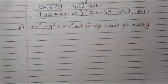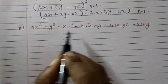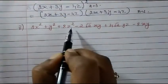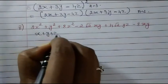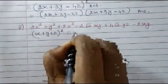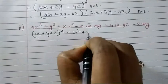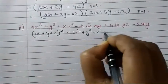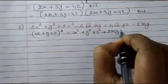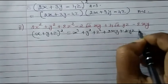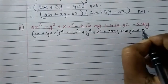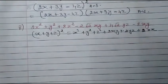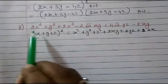Same way we have to do the next sum also. This also has squares and x, y, z terms, so the same identity applies: x plus y plus z whole square equals x square plus y square plus z square plus 2xy plus 2yz plus 2zx.